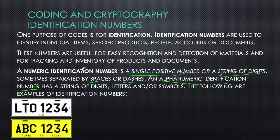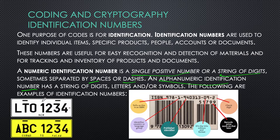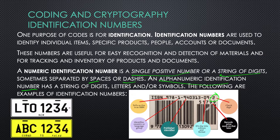This is an example of an alphanumeric identification number — a registration plate from the LTO. Every time you see this code, it is unique; if you search it in the database, your name will pop up if you registered that car. Also, this is an example of a numeric identification number — a barcode on a book. You can see the first three digits are the ISBN prefix, the next is the origin country or language group, then the publisher identifier, and the last number is the check digit.